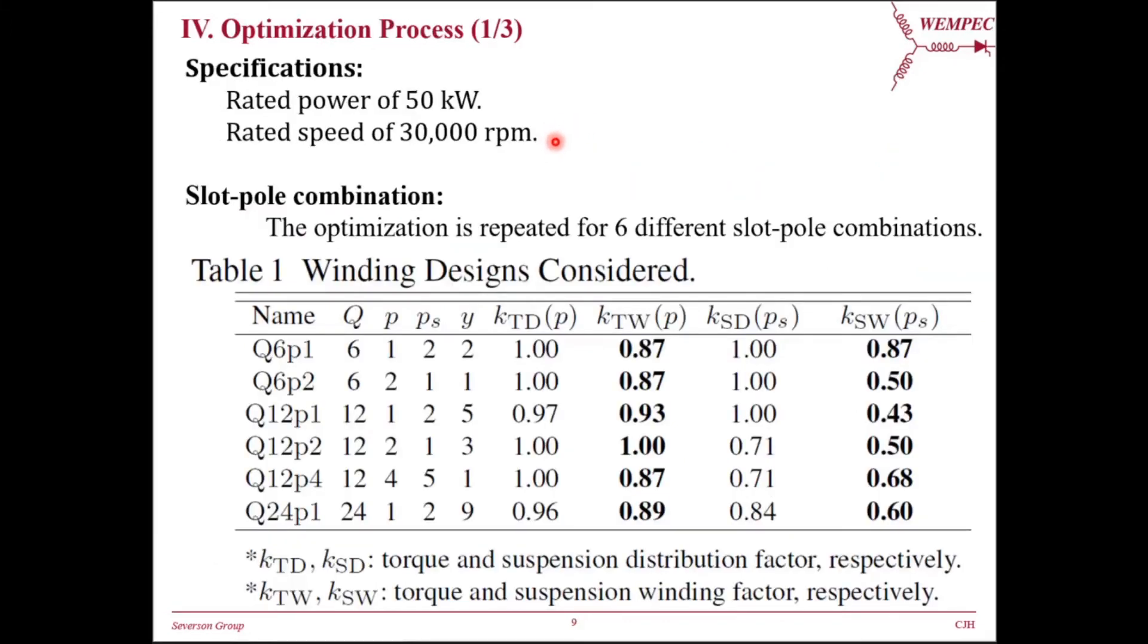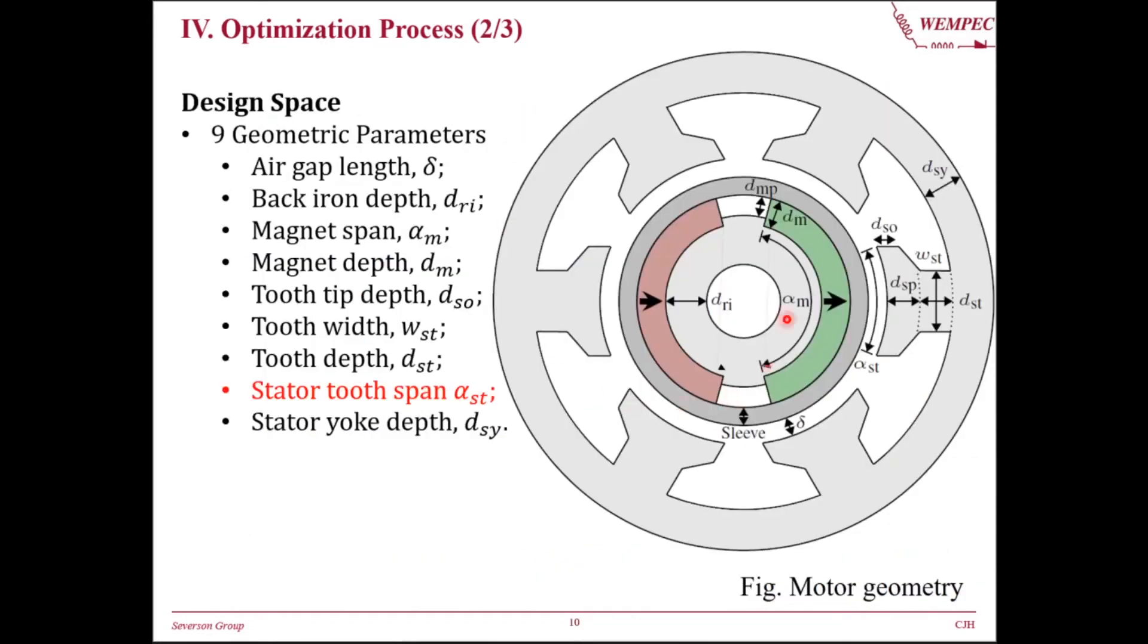Based on the FEA tool, we are now ready to perform the optimization. The design specifications are 50 kW and 30,000 rpm. The FEA-based optimization will be repeated for different slot pole combinations. Note that we should avoid selecting the pole-pair number for torque and suspension to be equal to phase number, which is 3. We recommend to pick a coil pitch Y such that torque winding factor is larger than 0.87, while the suspension winding factor could be lower than that. Particularly, the highlighted Q6P2 design and Q12P4 designs are fractional slot windings, and they have coil pitch Y equal to 1. We are going to explore different windings potential by searching in their design space. The design space is defined in terms of 9 geometric parameters as listed here. We will show later that stator tooth span is a particularly interesting and unique parameter for bearingless motors.